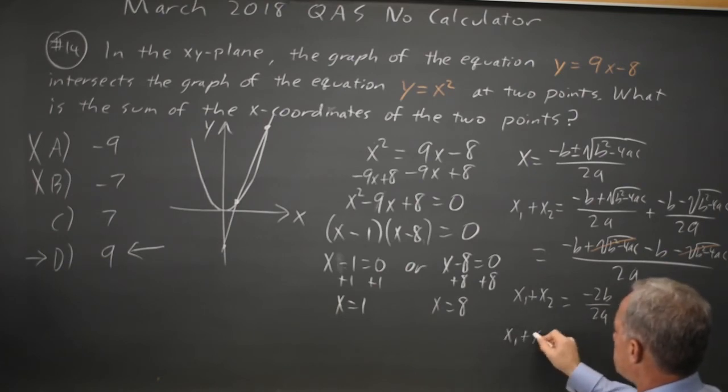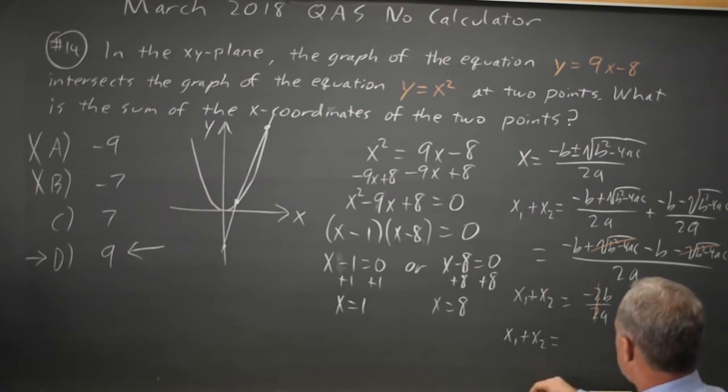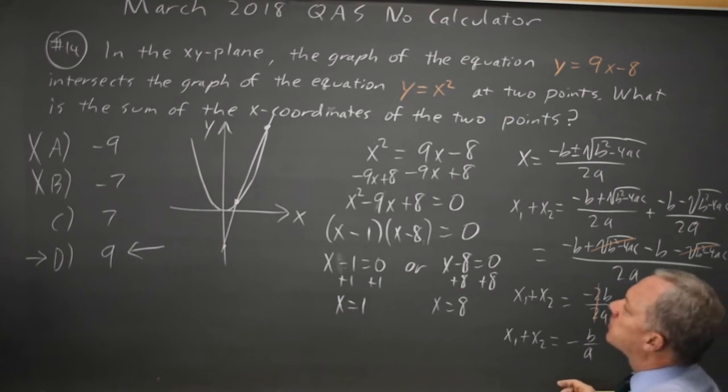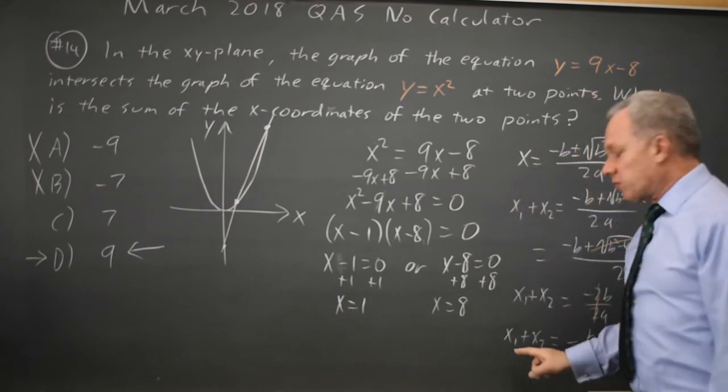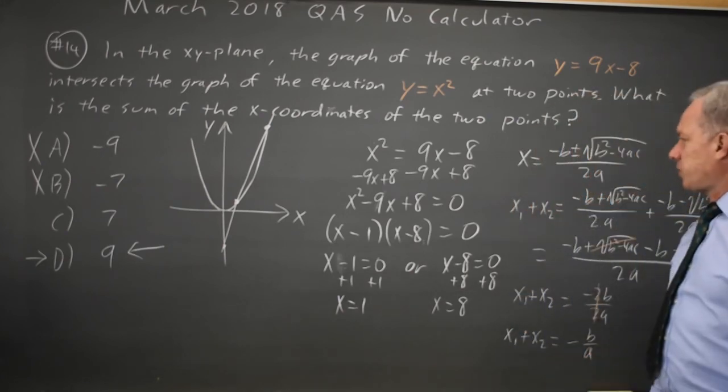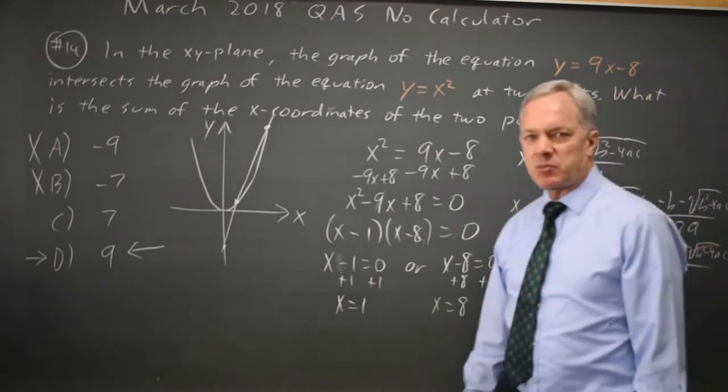So the sum of the roots x1 plus x2 is always, since 2 over 2 is 1, negative b over a. As soon as we wrote the quadratic, if we remembered that the sum of the roots was negative b over a, we could have answered the question at that point also.